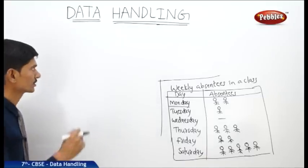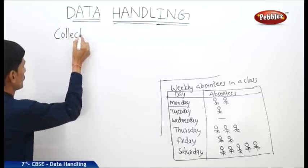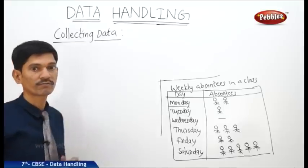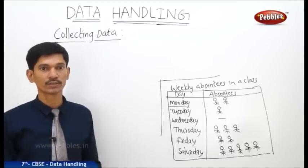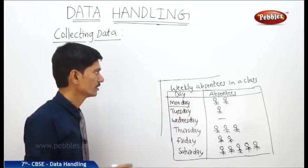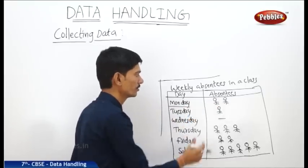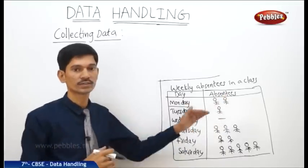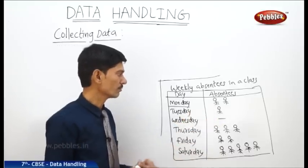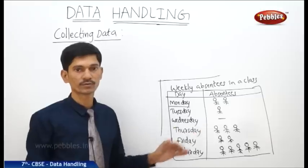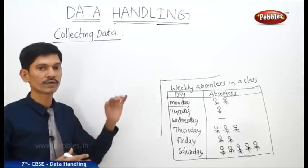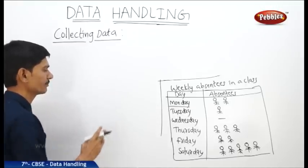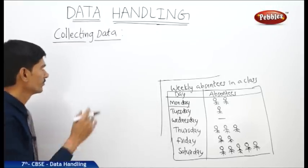Now let us see the next one, collecting data. How to collect the data? Now, if a given collection of data may not give us the specific information related to the data. For example, if you take the absentees of the students day-wise, then here we do not know how many students are there in the class. And here we know only the absentees, but we do not know how many students are present in that particular day. And what is the total number of students absent throughout the week, also we do not know. So for collecting any data, first we should know whether it gives the specific information related to the data or not. So for this we need to collect the data keeping that specific information in our mind.